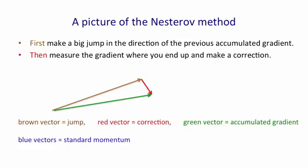We then combine that little correction step with the big jump we made to get our new accumulated gradient. We then take that accumulated gradient, we attenuate it by some number, like 0.9 or 0.99, and multiply it by that number, and we now take our next big jump in the direction of that accumulated gradient, like that.